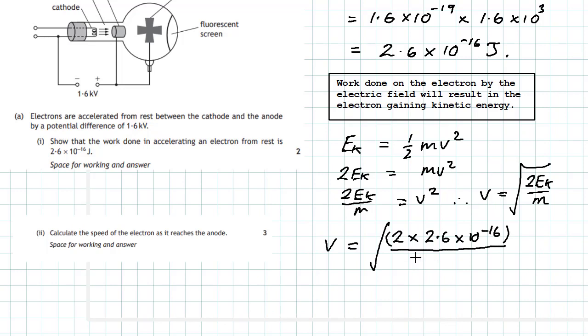So it will be divided by 9.11 times 10 to the minus 31. And remember it's the square root of all that answer.